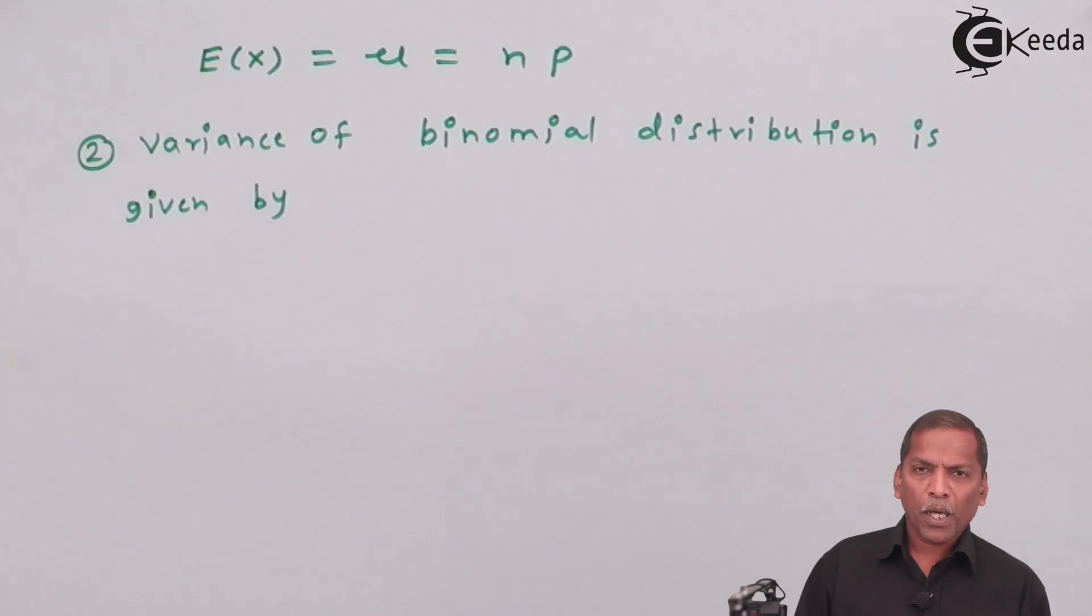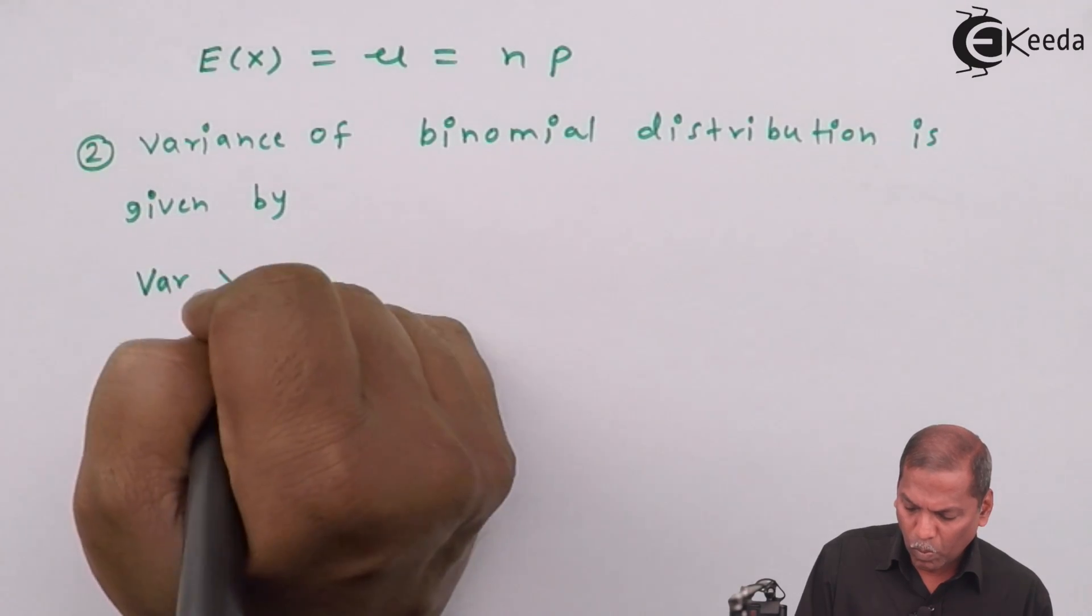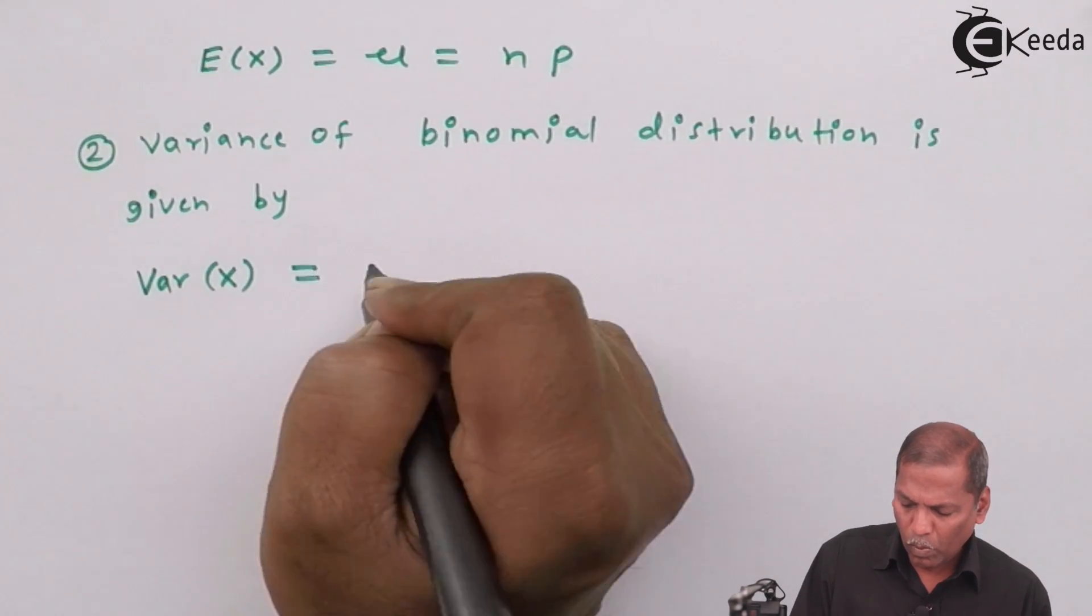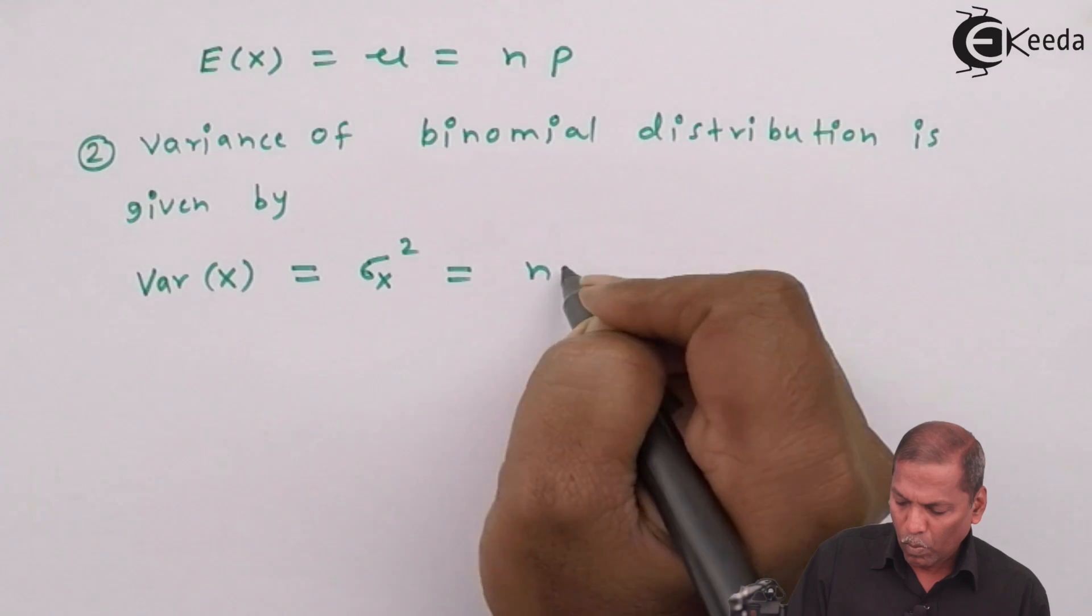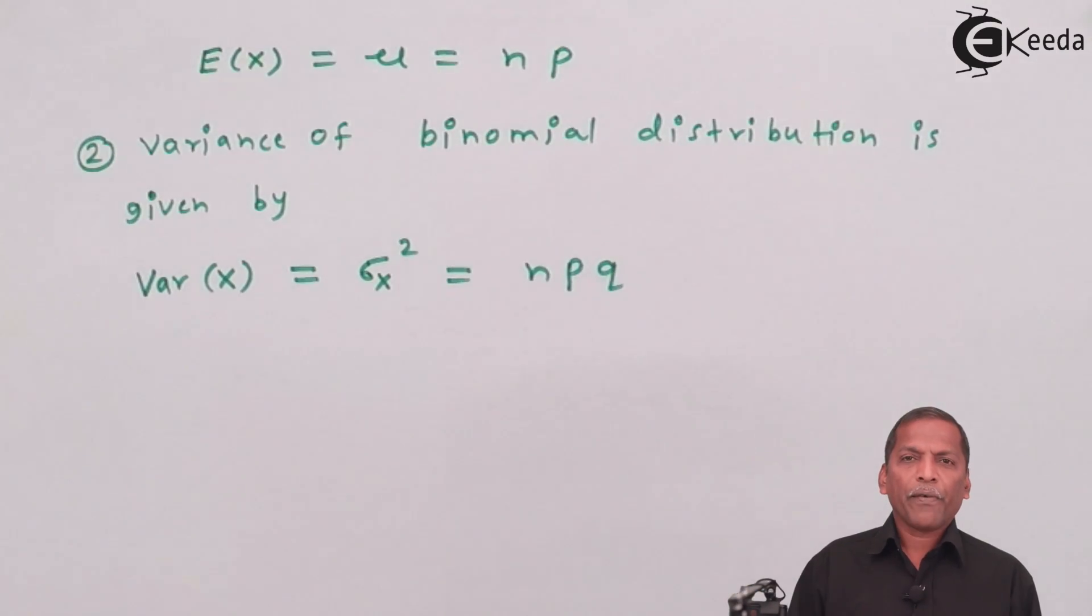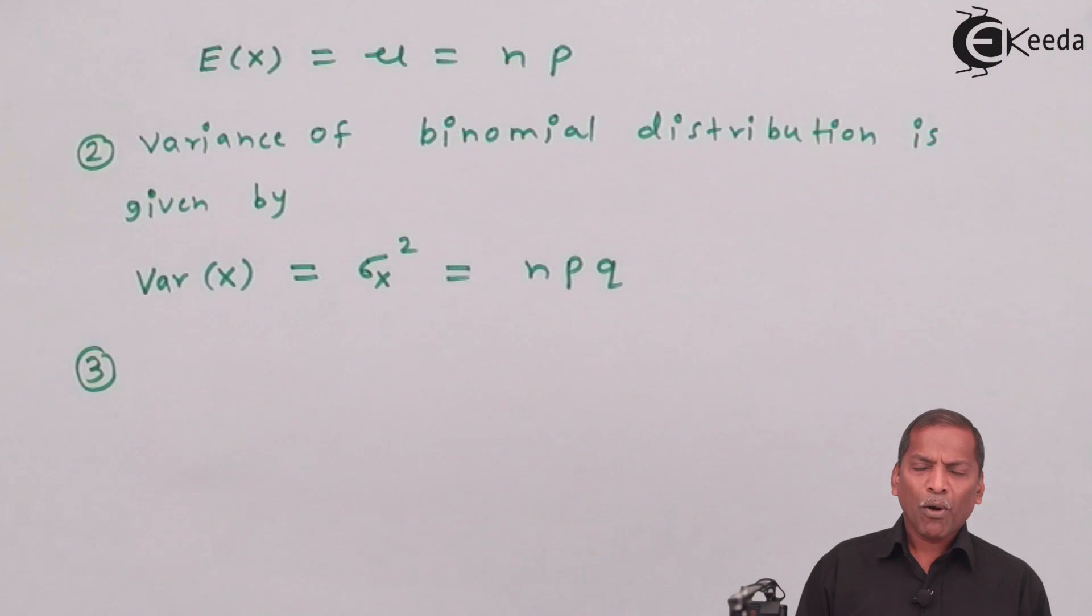Variance of X equals sigma X whole square equals nPq, where n represents number of trials, P represents probability of success, and q represents probability of failure.